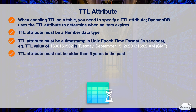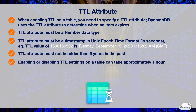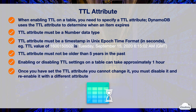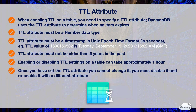The TTL attribute must not be older than 5 years in the past, otherwise the TTL process won't expire the item. Enabling or disabling TTL settings on a table can take approximately 1 hour for changes to propagate and for any TTL actions to be executed. Once you have set the TTL, you cannot change it to a different attribute. To modify the TTL, you must disable it and re-enable it with a different TTL attribute.